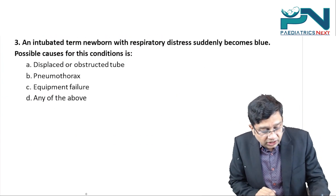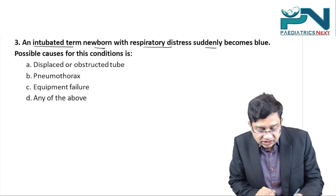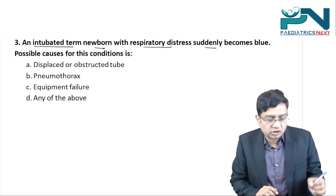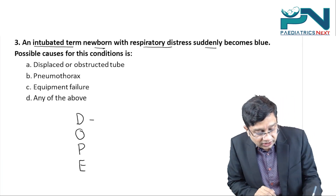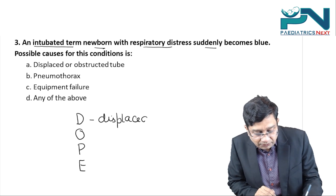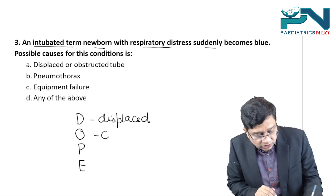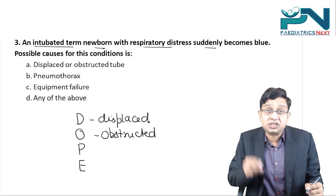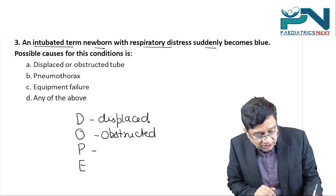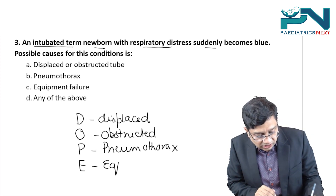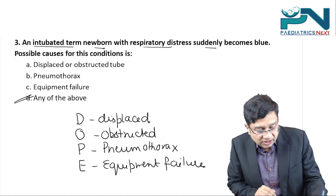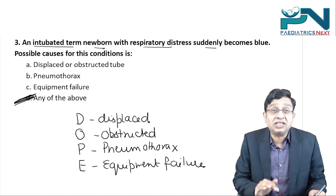Question number three: an intubated term newborn with respiratory distress suddenly becomes blue. Remember the mnemonic DOPE — D stands for displaced tube, O for obstructed tube (secretions blocking it), P for pneumothorax, and E for equipment failure. The best answer is any of the above can be the cause for the child suddenly becoming cyanosed.